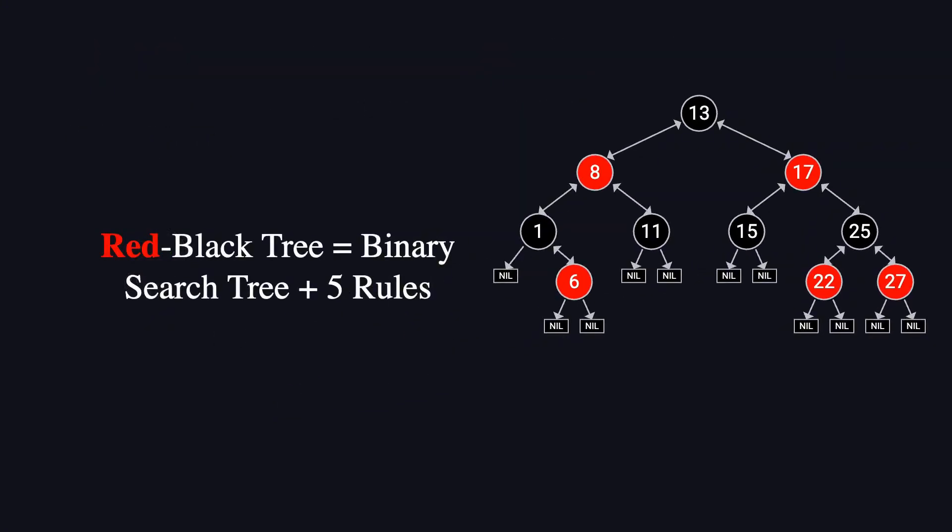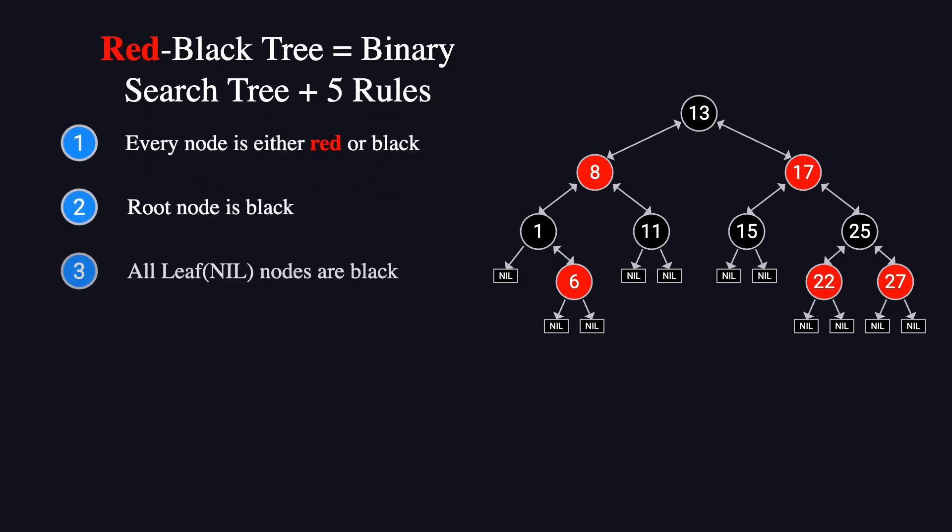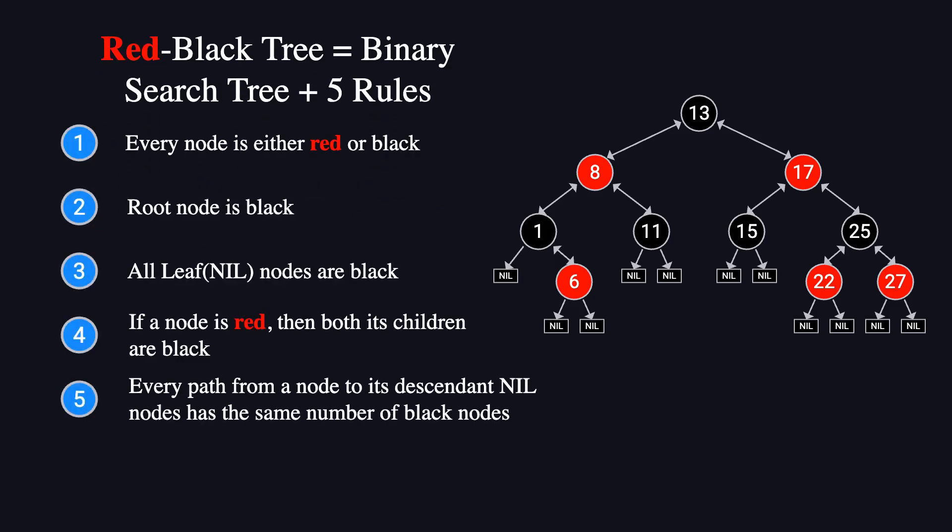A red-black tree is a special type of binary search tree that stays balanced by following five specific rules. We've gone over these in detail before, so if you need a quick refresher, feel free to pause the video and review them.